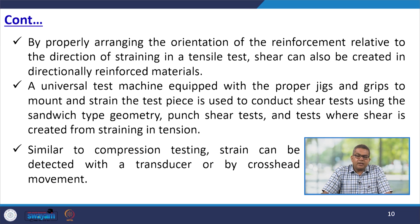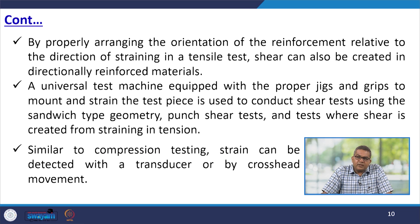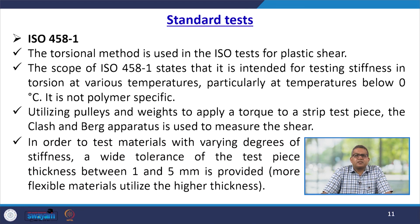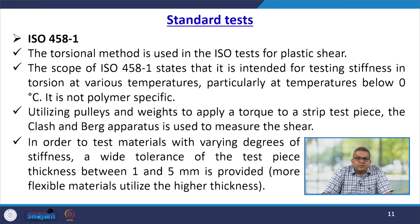A universal testing machine, sometimes referred to as a UTM, is equipped with proper jigs and grips to mount and strain the test piece. It is used to conduct the shear test using sandwich-type geometry, punch shear test, and tests where shear is created from straining in tension. Similar to compression testing, strain can be detected with a transducer or by cross-head movement. One relevant standard is ISO 458-1; the torsional method is used in this particular ISO test for plastic shear. The scope of ISO 458-1 states that it is intended for testing stiffness in torsion at various temperatures, particularly at temperatures below 0 degrees Celsius. It is not polymer specific.